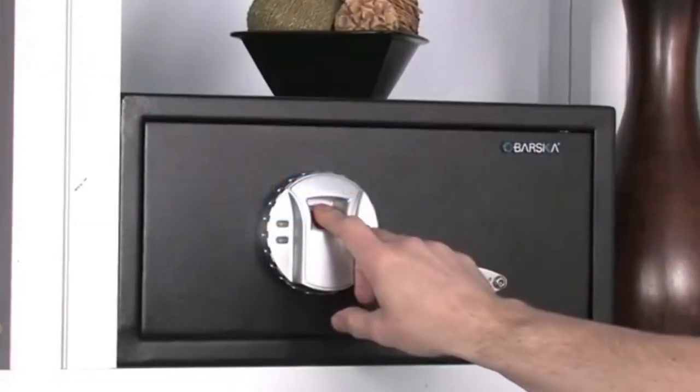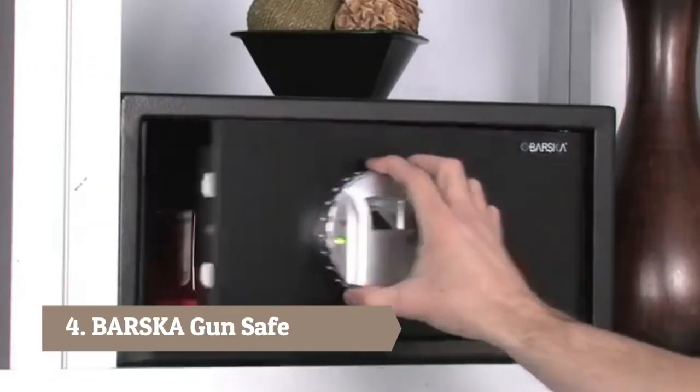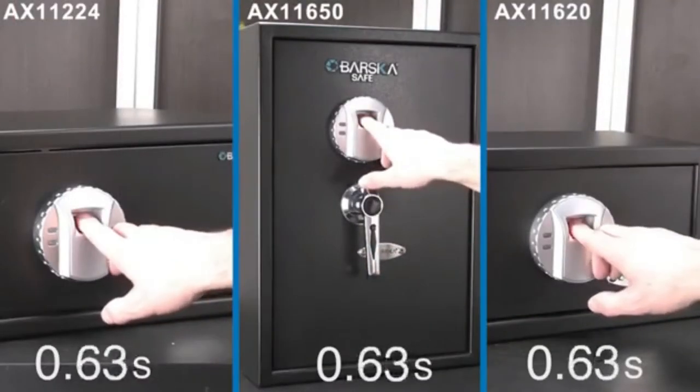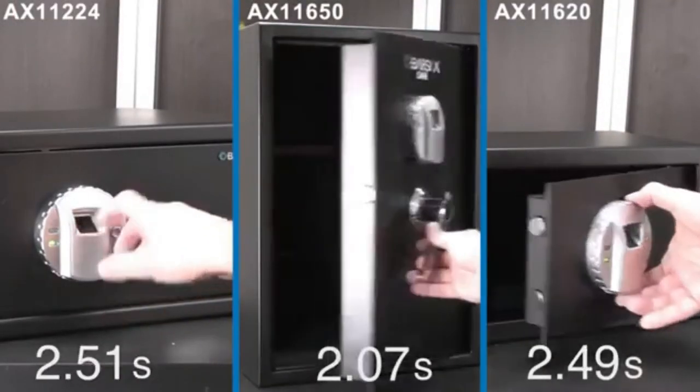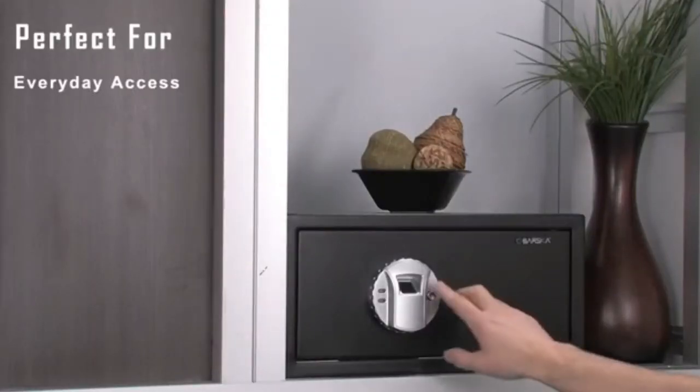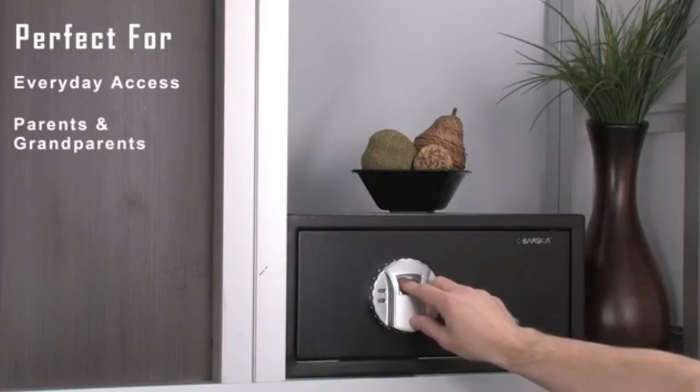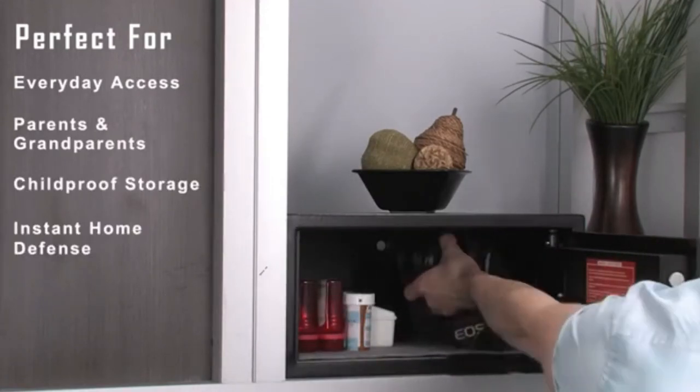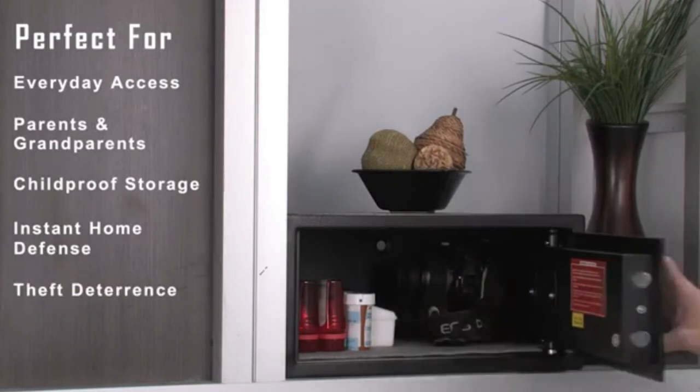If programmed properly, Barska's biometric security safes will unlock on the first attempt. Each fingerprint scan will take approximately 2.46 to 2.7 seconds, making the security safes perfect for everyday access, parents and grandparents, childproof storage, instant home defense, and theft deterrence.